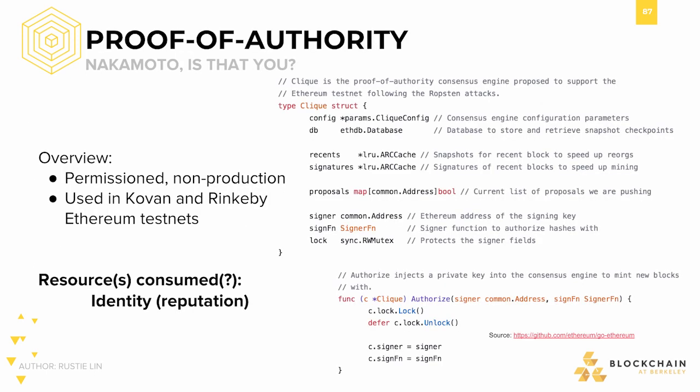A mechanism that does not directly fall under Nakamoto consensus but is worth mentioning is proof-of-authority. Proof-of-authority relies on trusted individuals signing off on updates to the network and is primarily used in permissioned or non-production networks. For example, the Kovan and Rinkeby Ethereum test networks use Clique, a proof-of-authority implementation. Following some attacks on Ropsten, proof-of-authority was chosen to better control vulnerable but not publicly controlled test nets. The resource consumed is identity, though there is a question mark because this follows the paradigm of politically centralized systems with a few actors making decisions for the rest of the network.